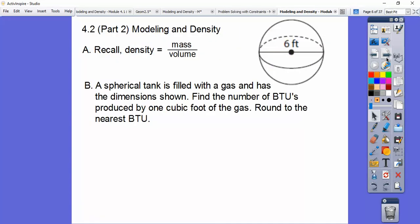So here we have a spherical tank that's filled with gas and has the dimension shown. Find the number of BTUs produced by one cubic foot. All right, so right after that, they give you that the tank is filled with natural gas. It provides 116,151 BTUs. So that's going to be our mass right there, and then we need to find the volume and divide it by the volume to get our BTUs per one cubic foot.